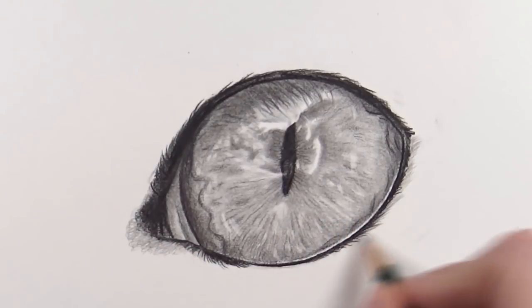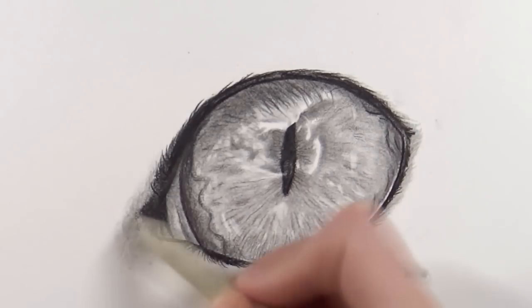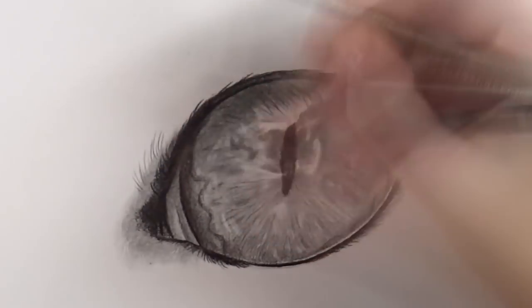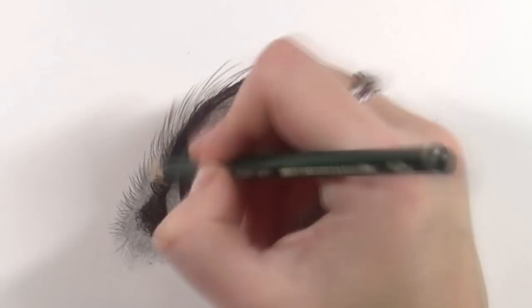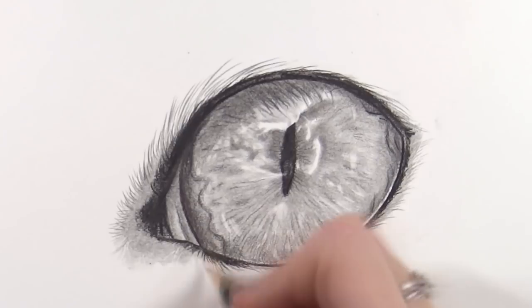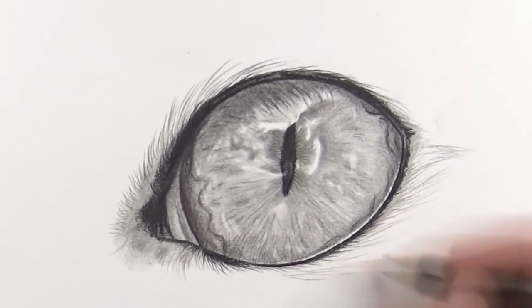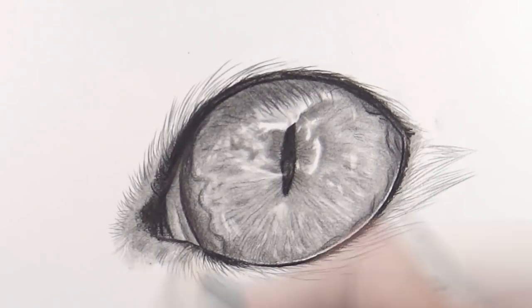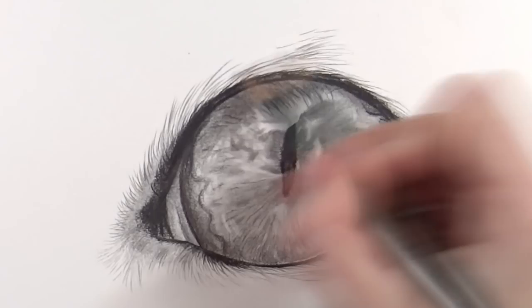I also pulled out some highlights with my kneaded eraser and my Tombow Mono Zero eraser. After that, I did some of the fur around the eye, not super detailed, but just some fur to get some contrasting textures in the drawing. I wanted to make this tutorial for Patreon beginner-friendly, so that's why I left it quite medium detailed. But it was also just a very nice study for myself.